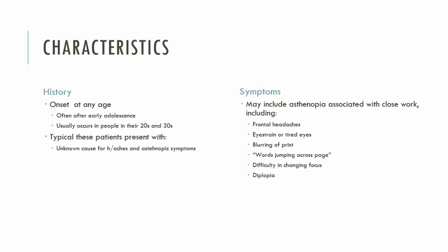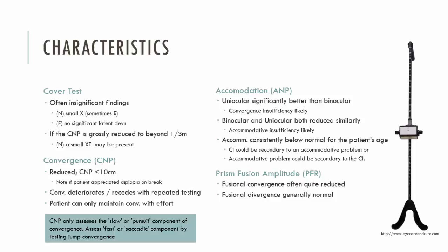This is for patients with remote CMPs who have extremely reduced convergence near points and are breaking down into a manifest deviation, usually an exo-deviation, and are suppressing on break. In our clinical investigation, we use a series of tests to diagnose CI. Visual acuity and ocular movements should be normal; what I'm concentrating on here are the anomalous findings that highlight the patient has CI.